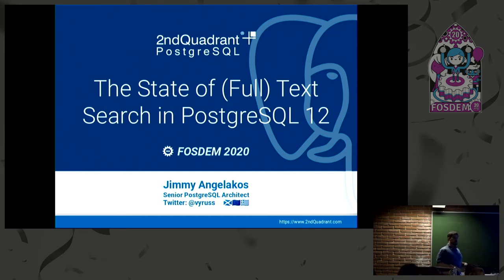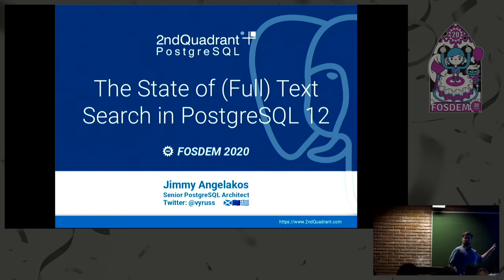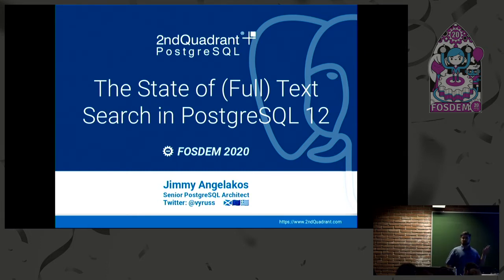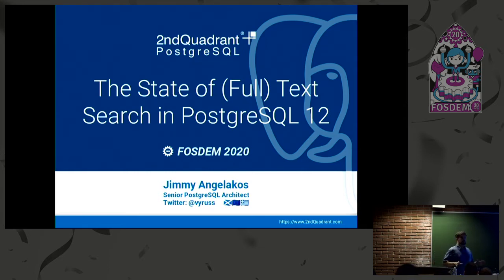The motivation for this talk is I was speaking to some colleagues, customers, community members, and I was surprised to find out that these things aren't all that well known. There are people that use Postgres that actually use external search engines to index their text — like Lucene, Solr, and Elasticsearch, which are all basically the same code base. These things aren't databases. They create indexes for your text, but your text is in your database. So why have an extra thing when you can index your text in the database?